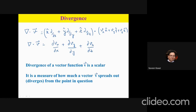So the divergence yields: ∂vx/∂x + ∂vy/∂y + ∂vz/∂z. Notice that the divergence can be applied to a vector function, and the result is a scalar quantity — the vector terms are eliminated and you are left with just a number.